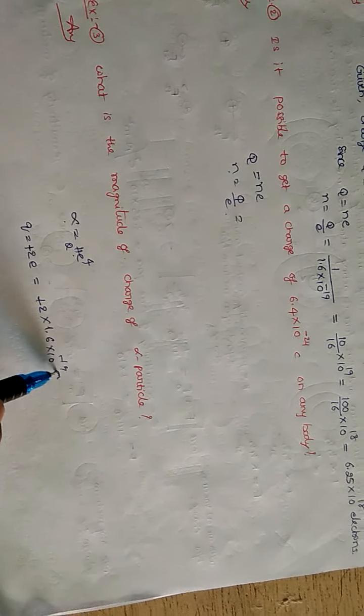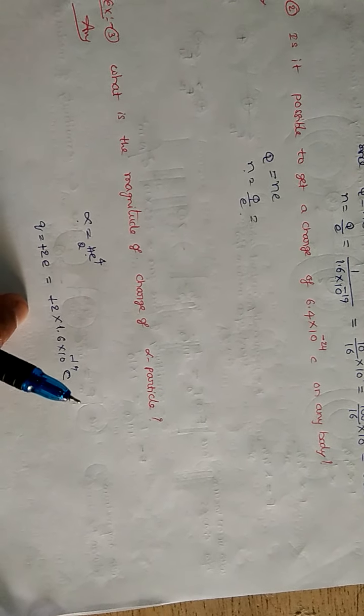So, plus 2e into 1.6 into 10 power minus 19 Coulomb. Multiply, you will get the amount of charge of alpha particle and we are going to study the next topic in the next slide.